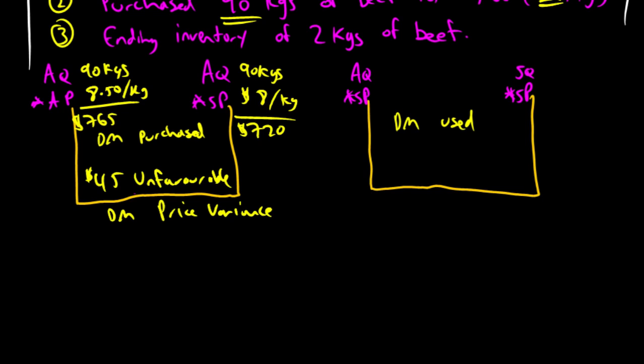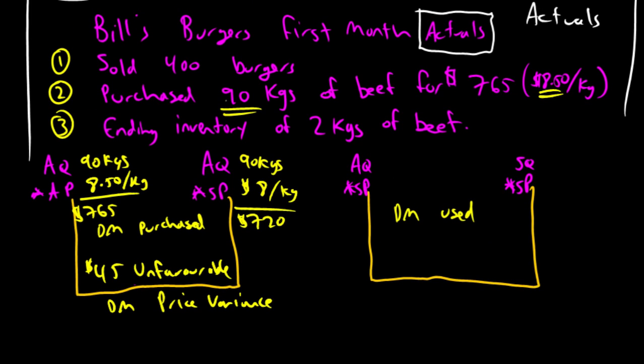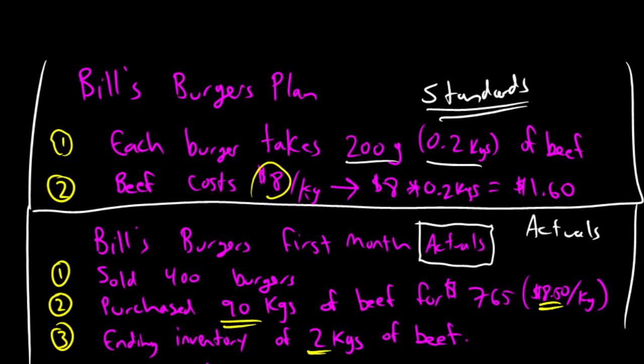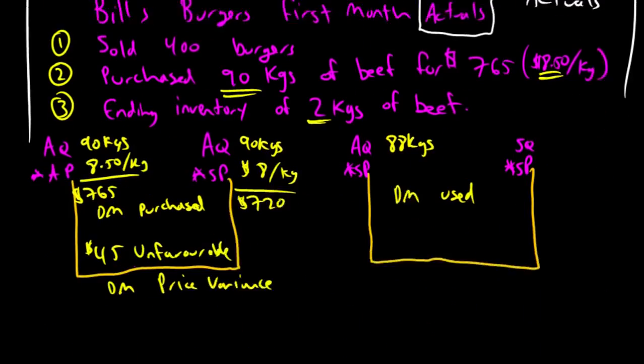Moving over to quantity. The direct materials used, we want to figure out the actual quantity of material that he used. He purchased 90 kilograms. He had 2 kilograms left over. So, he purchased 90, he had 2 left over. He must have used 88 kilograms. His standard price here didn't change. His standard price was and is $8 a kilogram. So, he used 88 kilograms. The cost here was $8 a kilogram. 88 times 8 is $704.